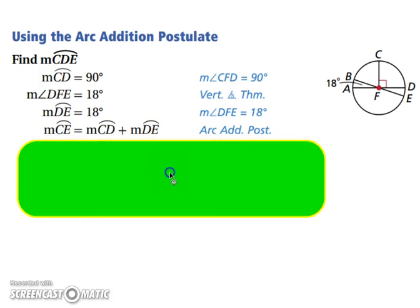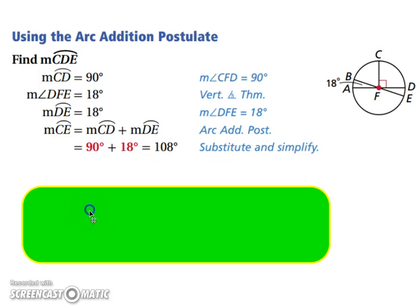Well, now we can add them together. So if we take our measure of arc CD and the measure of arc DE, we'll end up with CDE, or CE in this case. So 90 plus 18 gives you 108.